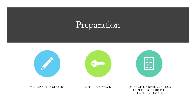For the preparation step, you want to do three different things. You want to write a profile of the users — who the users are likely to be, what they're likely there to do, and some information that will help you understand them. Then you want to define a key task. And then you want to list an appropriate sequence of actions needed to complete the task. You'll likely have several tasks, and you'll want to write a list of actions for each one.